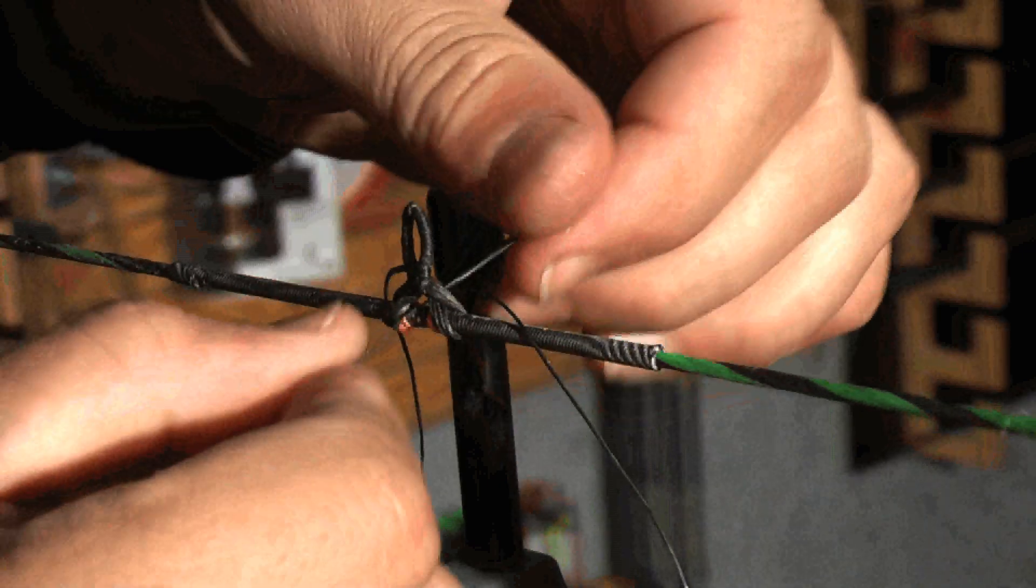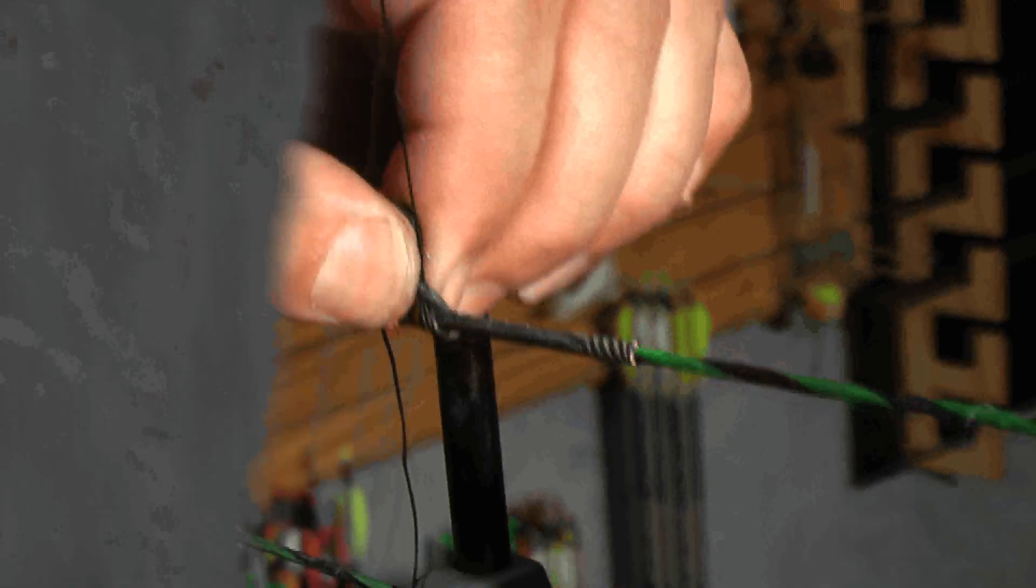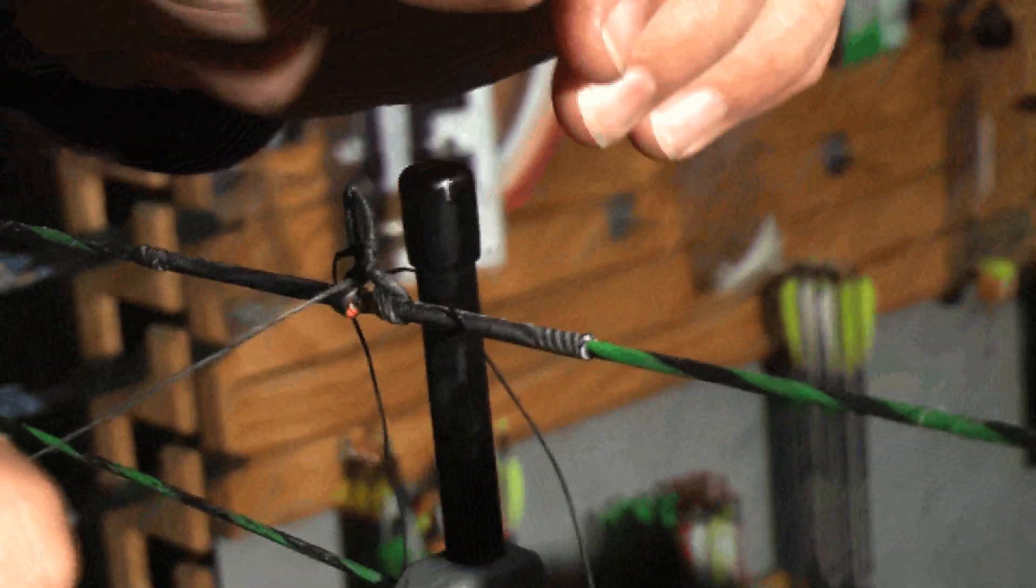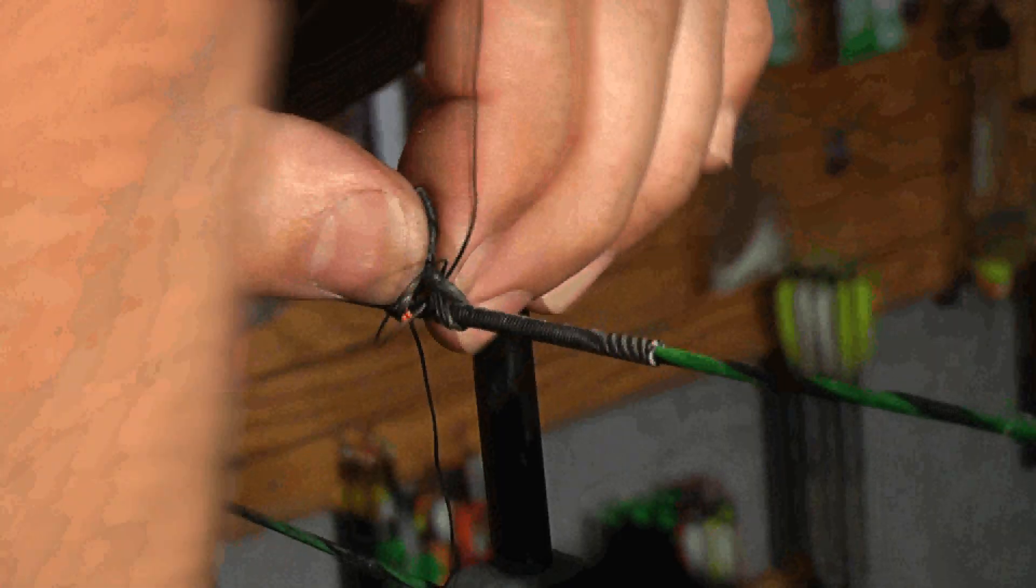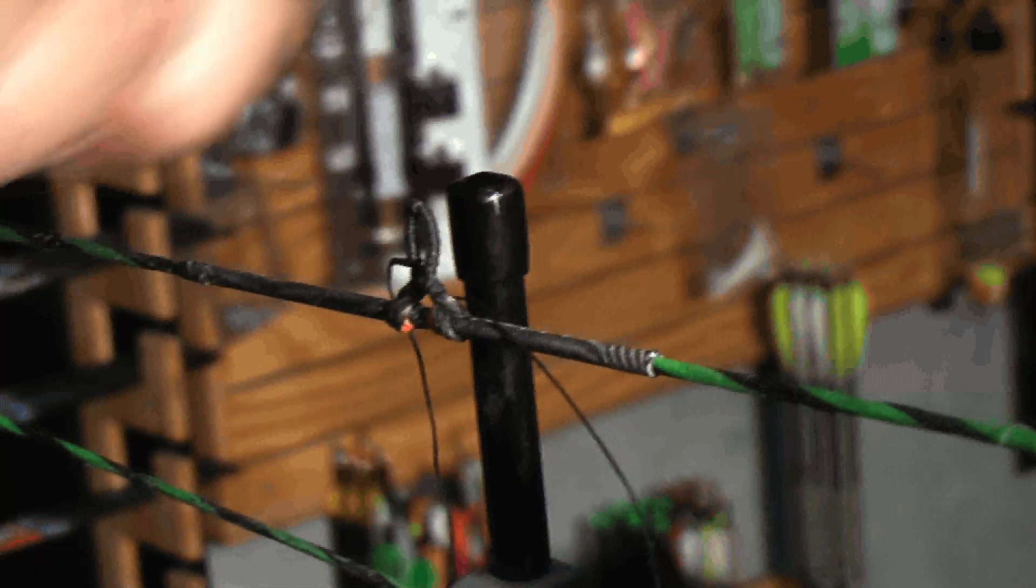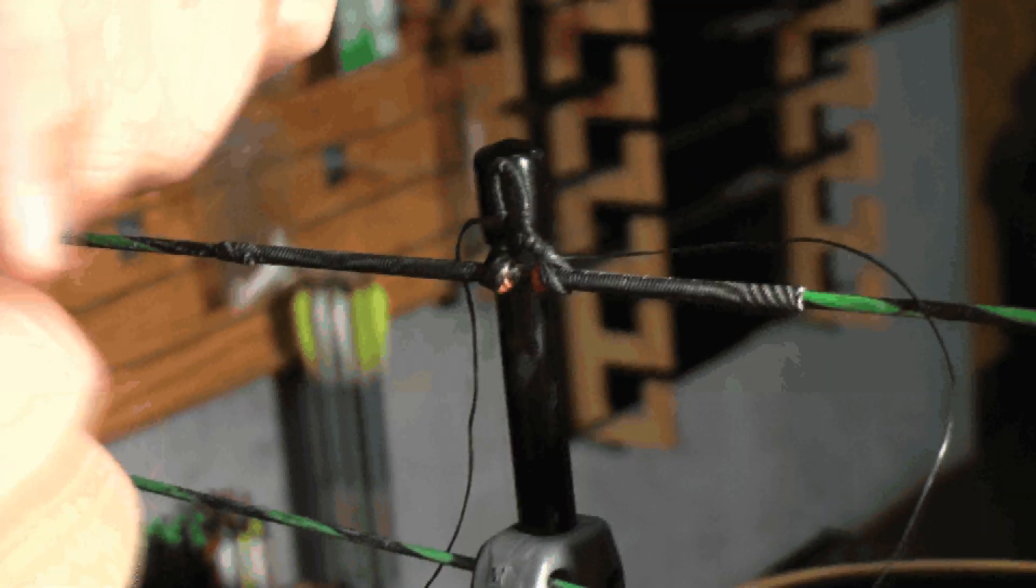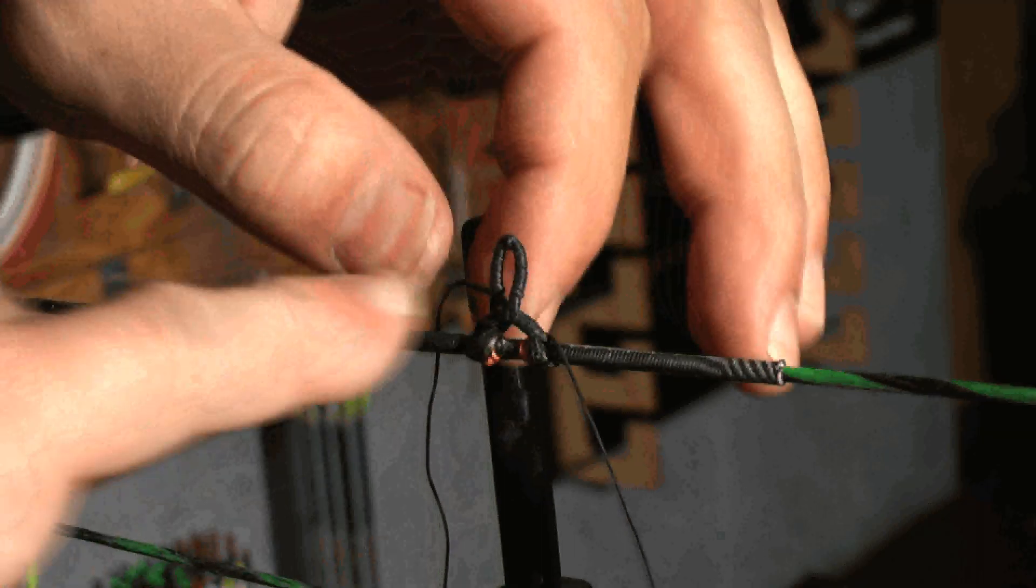The closer you get to the string, you want to pull the tag nice and tight. You want all the pieces of string on the infinity loop to be nice and tight. And you want it to be on the outside of the tied-in knocking points that you tied.